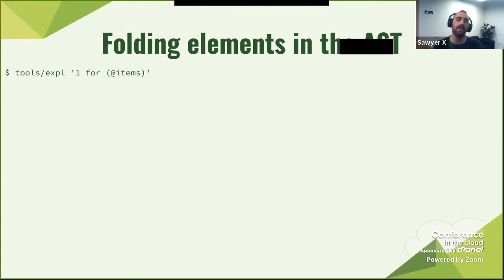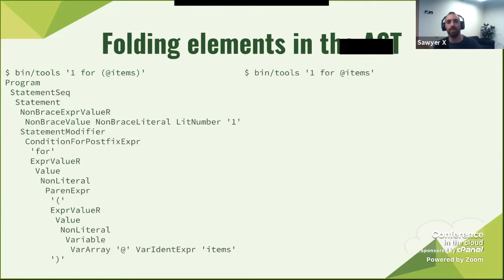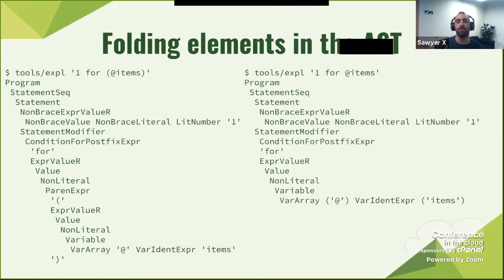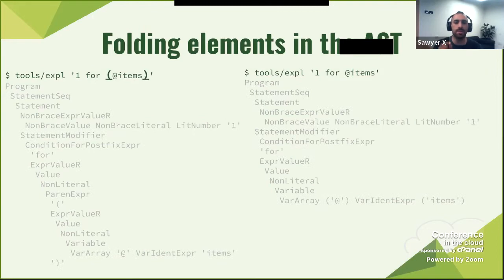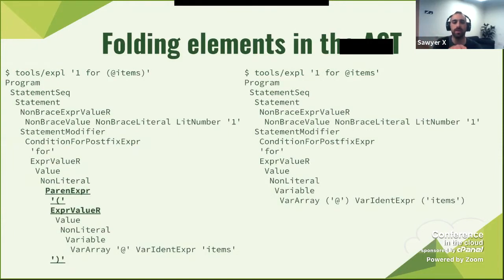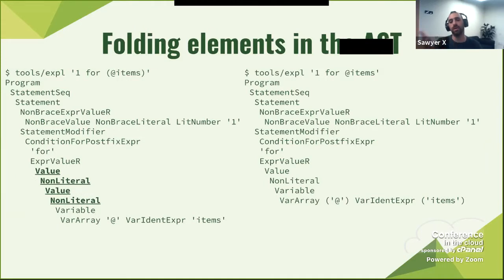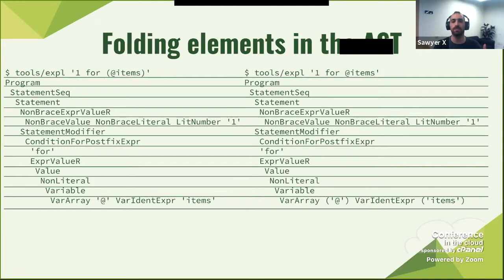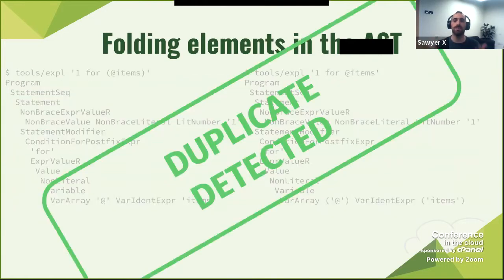Here's an example of folding elements in the AST. I use the 'explain' tool on a 'for items' expression and get a nice output back. Now, if I rename it slightly, I'm getting a different AST. The difference is just parentheses, but it creates significantly different trees because one generates an additional parentheses expression. If I remove that — having it and not having it is the same code — and fold it, I get a simpler result. Then I can also remove the redundant 'value not literal' nesting. Folded, these are now equivalent, which means I can find this as a duplicate.